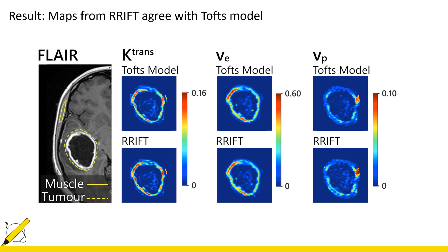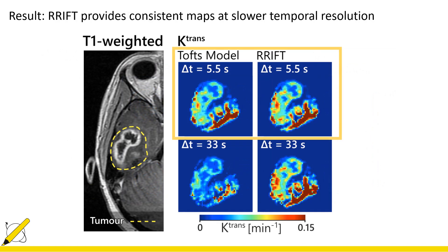This is an example of parameter maps using the TOFTS model in the top row, which uses the full input function, while the bottom row uses RIFT. The parameter maps look similar using either technique. The temporal resolution in this case was five seconds. The advantage of RIFT is that since it does not require the initial part of the input function, it remains consistent even at slower temporal resolutions. The K-trans map from the TOFTS model and K-trans map from RIFT look similar when the temporal resolution is 5.5 seconds.